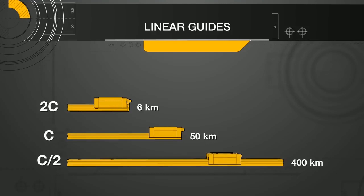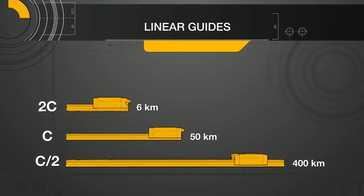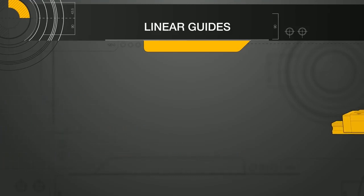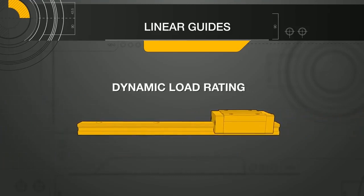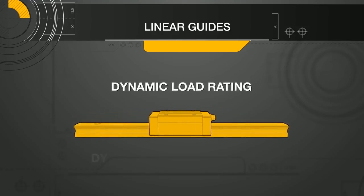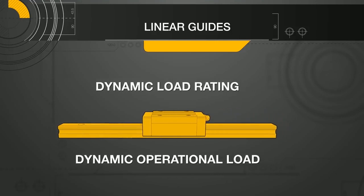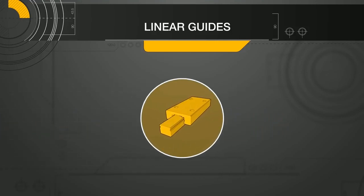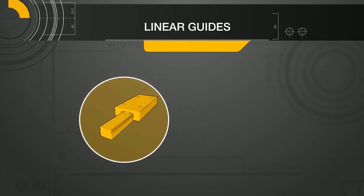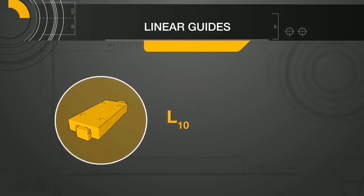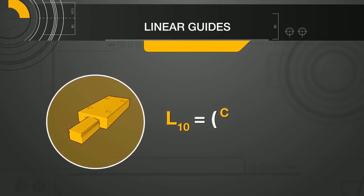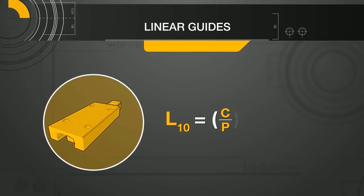Unlike the basic static load rating, the basic dynamic load rating may be exceeded at the expense of service life. It follows then that the basic dynamic load rating can also be used to calculate the expected life of the linear guide system under a dynamic operational load. For example, for a ball-type linear guide, the 90% reliability service life parameter of the bearing, designated as L10, can be calculated using a simple ratio of the basic dynamic load rating, C, to the applied operational load, P.